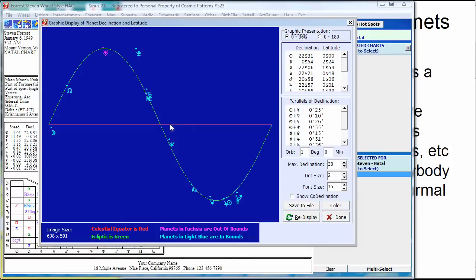So this is a nice diagram to visually see how far the planets are from the ecliptic plane. And when they move beyond this path that looks like a sine wave, this is the path of the sun, the ecliptic plane. And if they move outside it, and we see that Uranus is just a little bit outside it, that's out of bounds.